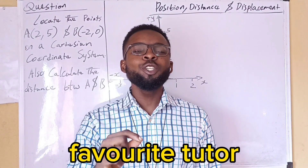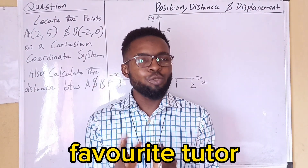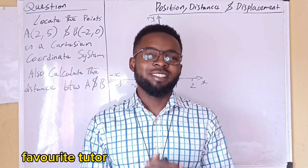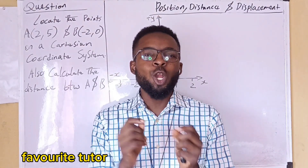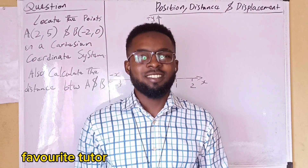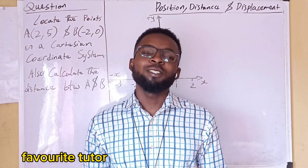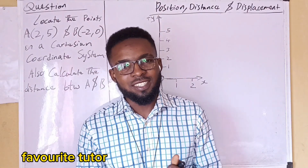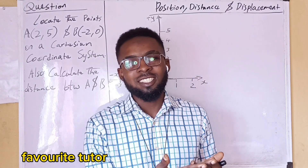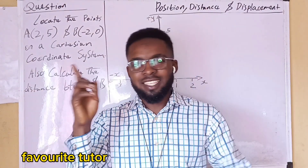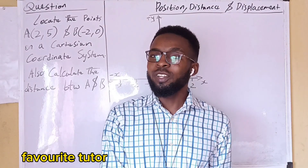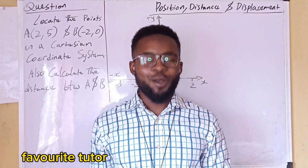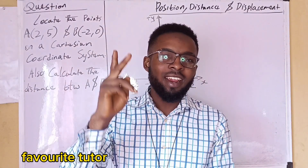Position is the location of a point with respect to a given frame of reference. Now how do we locate a point? We locate a point by using the coordinates of that point. Therefore we have the two-dimensional coordinate system and the three-dimensional coordinate system. The two-dimensional coordinate system is known as the Cartesian coordinate system — that is the x and y coordinate system. And the three-dimensional coordinate system, or what we know as the space coordinate system — we are talking about x, y, and z.